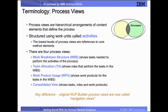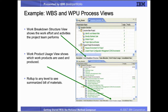Process views are hierarchical arrangements of content elements that define the process. There are four basic process views: the work breakdown structure, which shows the tasks needed to perform the activities of the process; team allocation, which shows the roles that perform the tasks in the work breakdown structure; the work product usage view, which shows work products for the tasks in the work breakdown structure; and the consolidated view, which shows tasks, roles, and work products. These views, just like content definitions, can be published to the method website, but they also contain information needed by project managers that can be exported as templates for project management tools. These views can only be seen by opening a process definition in either the library view or configuration view — select the process in whichever tree, double click on it, then click on the appropriate tab at the bottom of the editor.